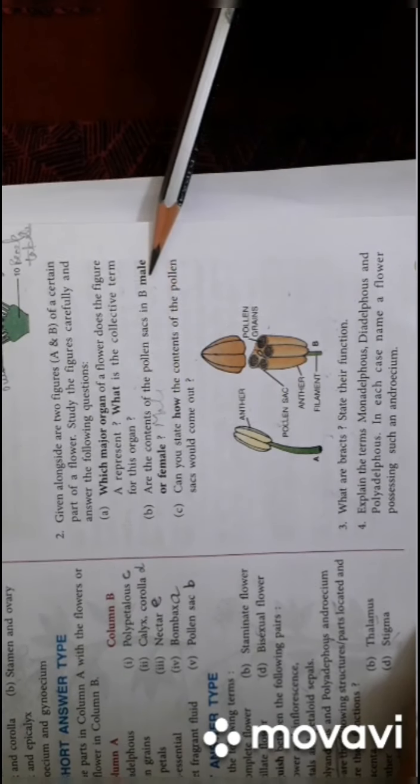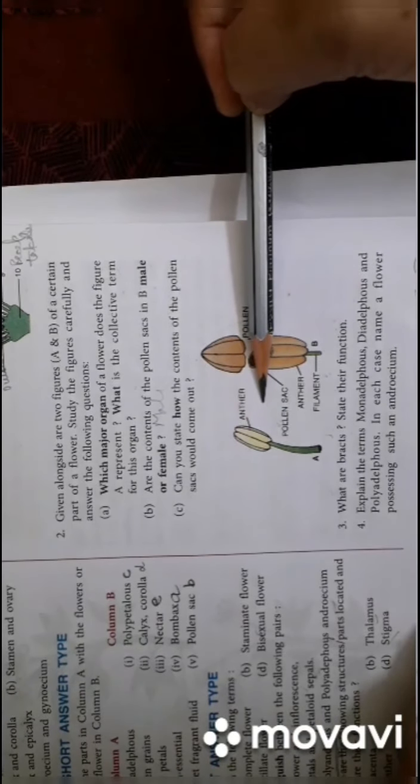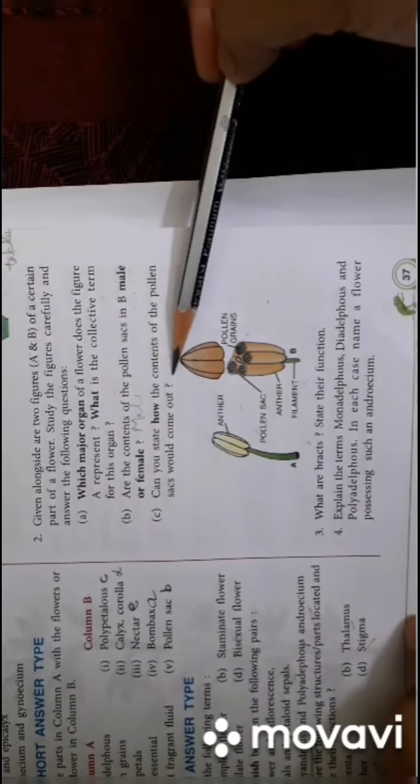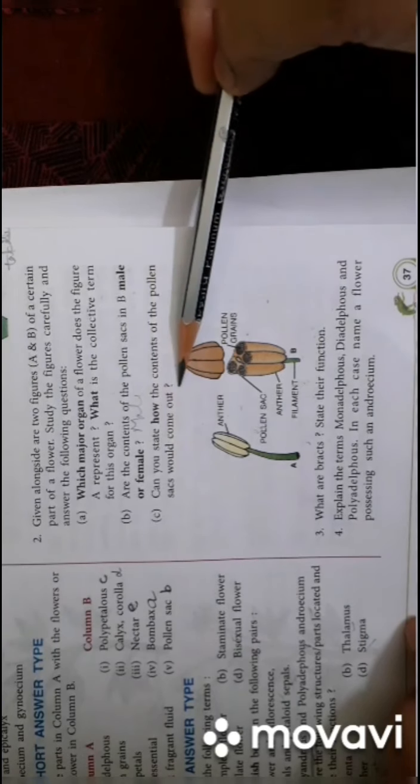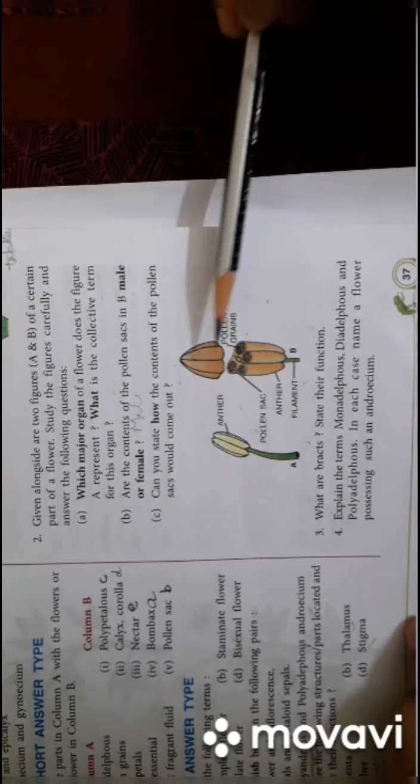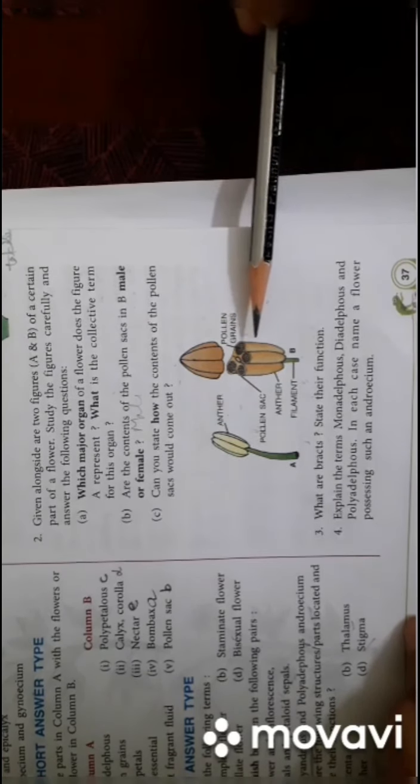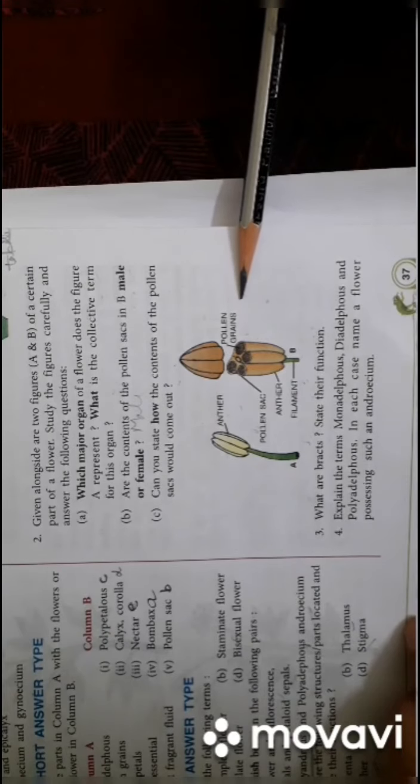Are the contents of pollen sacs in B male or female? These are male because this is the transverse section of anther. Can you state how the contents of pollen sacs would come out after maturity? The pollen sac will rupture and the pollen grains are liberated in the environment, in the atmosphere, from where they will be taken off by wind, water, or various kinds of agencies - birds, insects, etc.